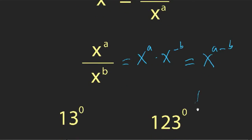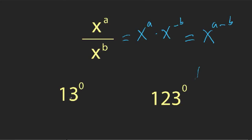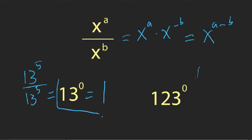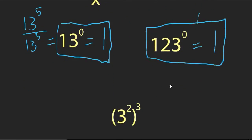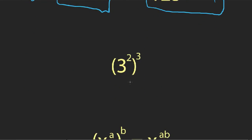That division rule also gives us a way to define the zeroth power. What's thirteen to the zero? That has to be the same as thirteen to the fifth over thirteen to the fifth, since subtracting those exponents gives five minus five equals zero. But thirteen to the fifth divided by itself is always one. This is independent of the base — it could be 123 to the zero — and it's still one. So any number to the zeroth power is always one.